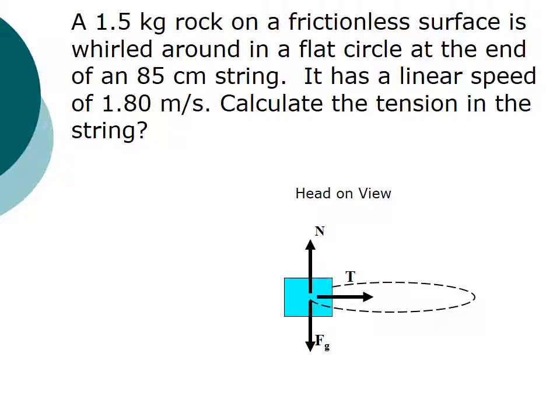Now that we have a free body diagram, we want to list all the variables that we know and the thing we want to know. Okay, so real fast, here we go. We've got the mass of 1.5 kilograms. We've got a string length, which is our radius of our circle. Note how I've listed it, 0.85 meters. This is in centimeters. Please make sure your units are in basic units. And so that our linear speed is 1.8 meters per second, which we have listed over here. And we're looking for the tension.